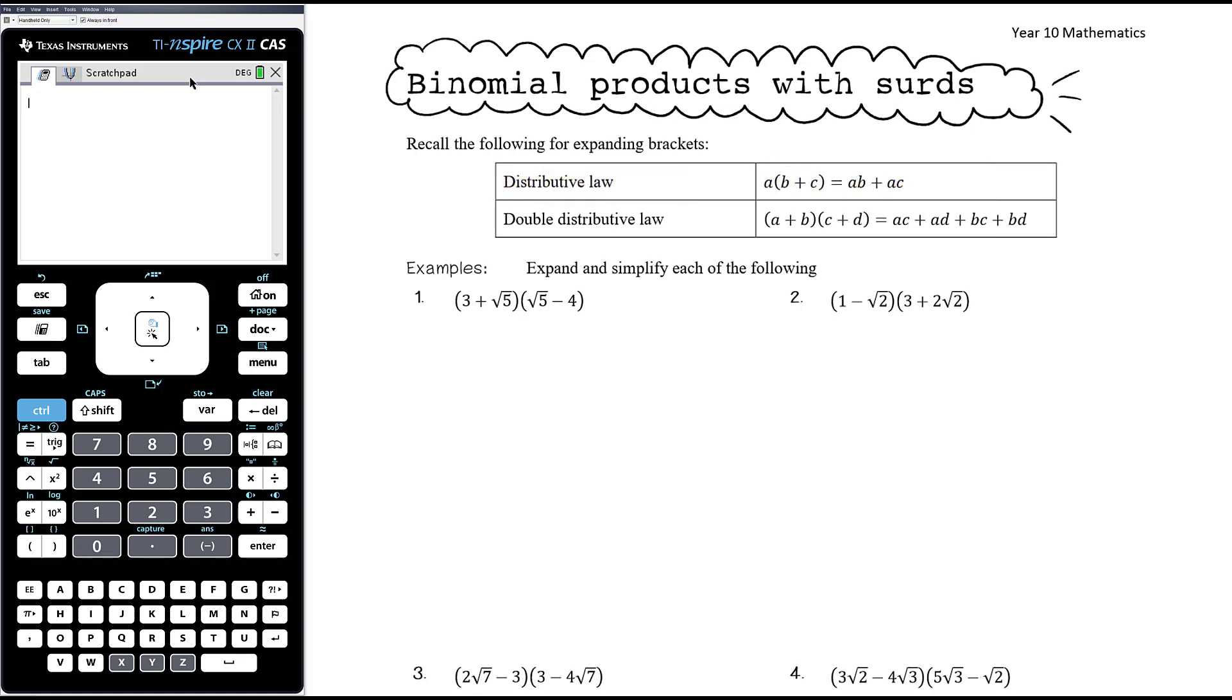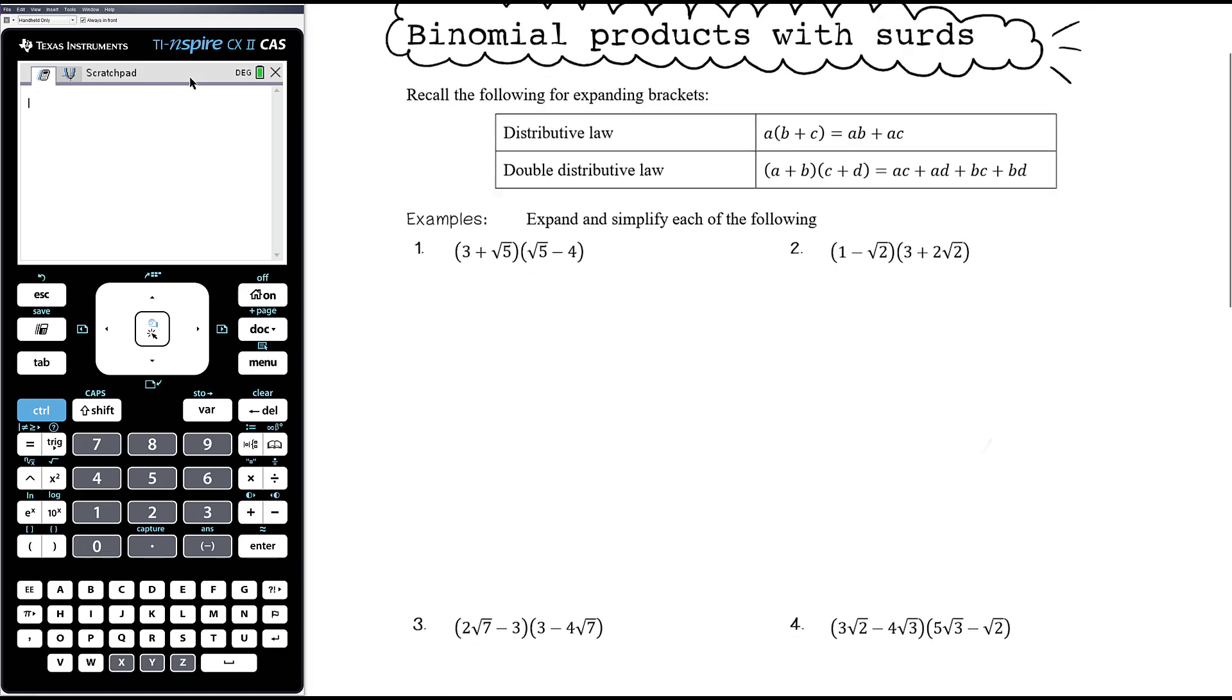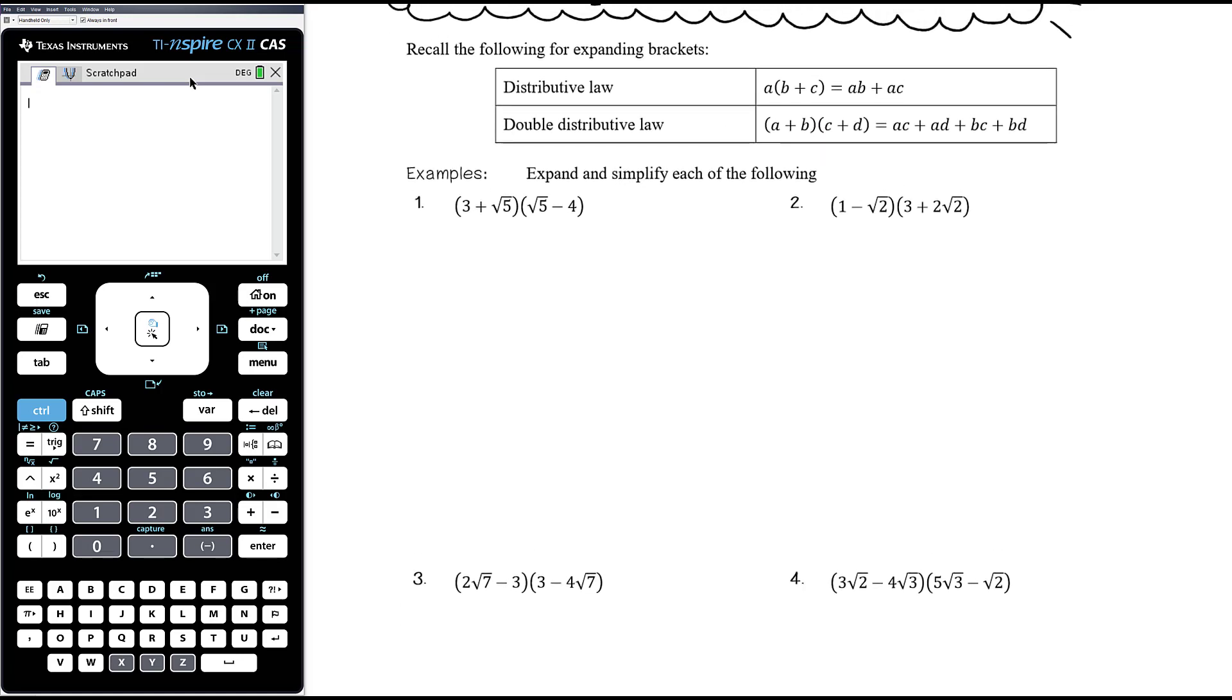Here we want to look at binomial products, so that is products where we have two terms in each bracket, and for that we need the double distributive law, remembering that everything in the first bracket multiplies everything in the second bracket to get a times c plus a times d plus b times c plus b times d. So it's really just about taking your time, don't skip too many steps if you can help it, you'll make mistakes, but we just need to multiply all four things together.